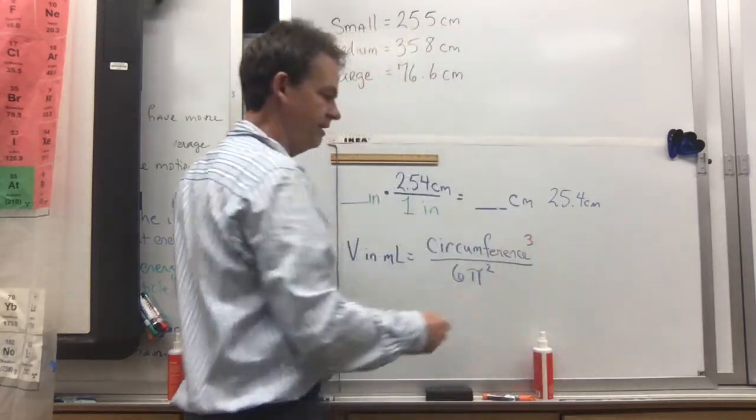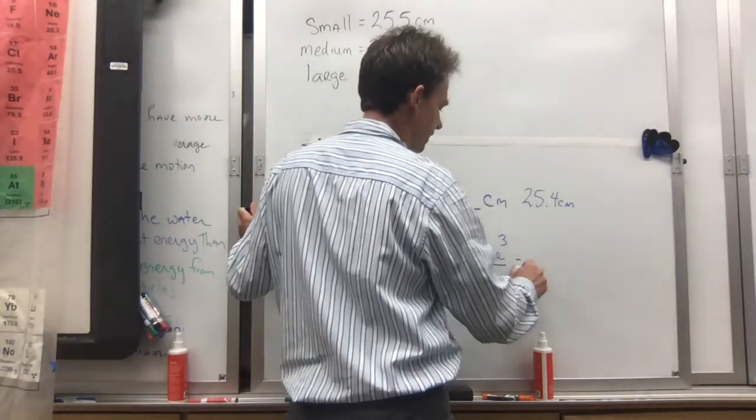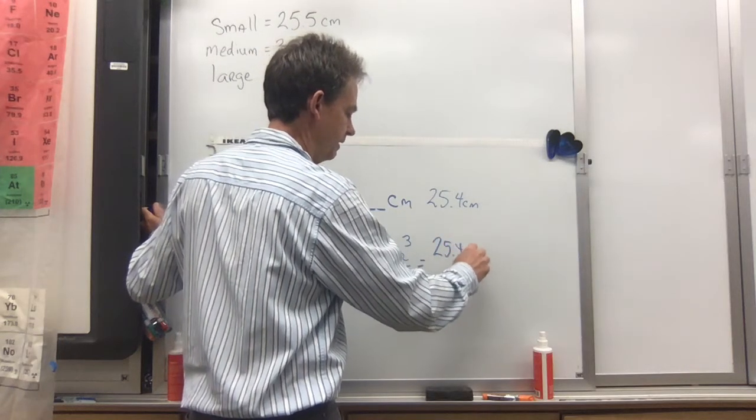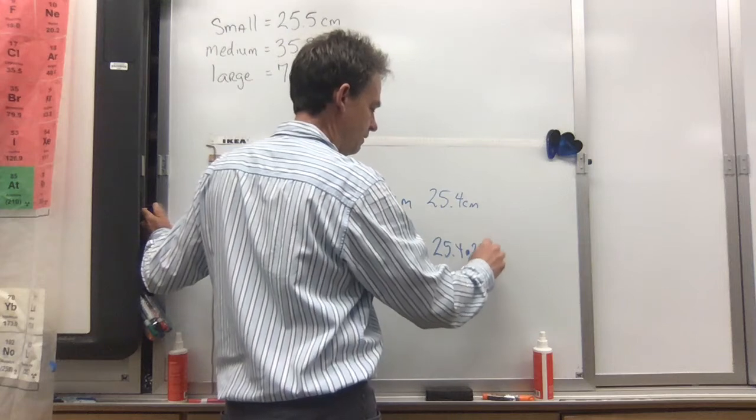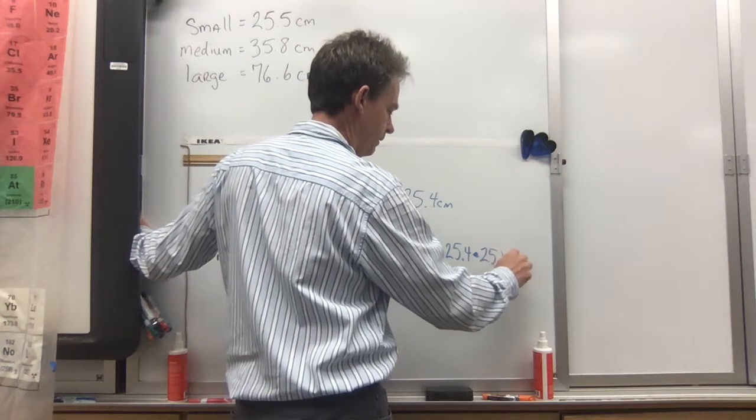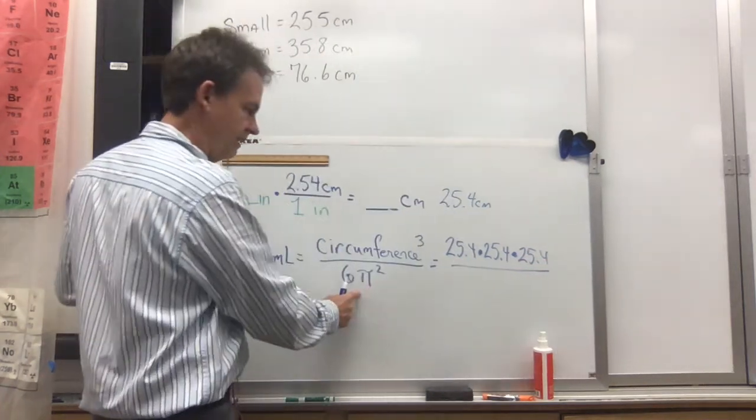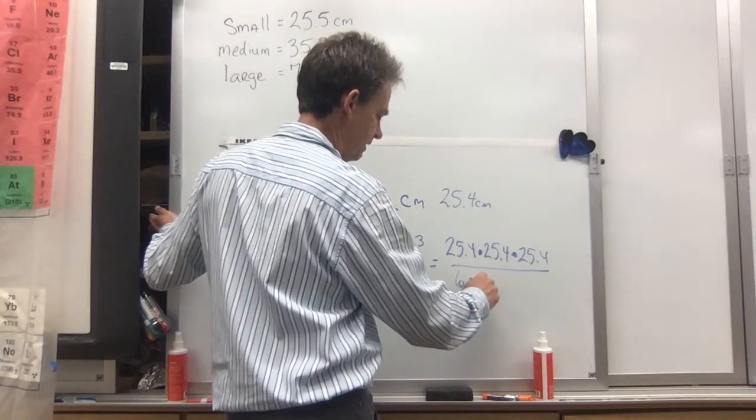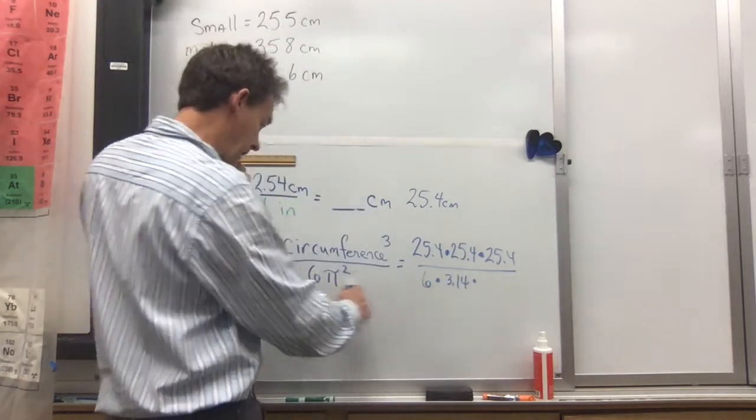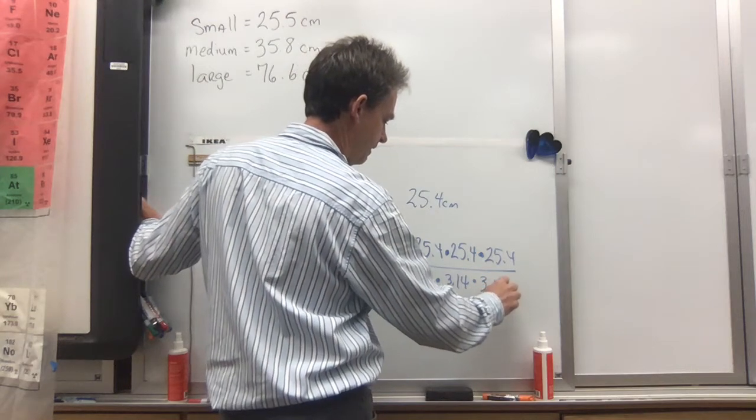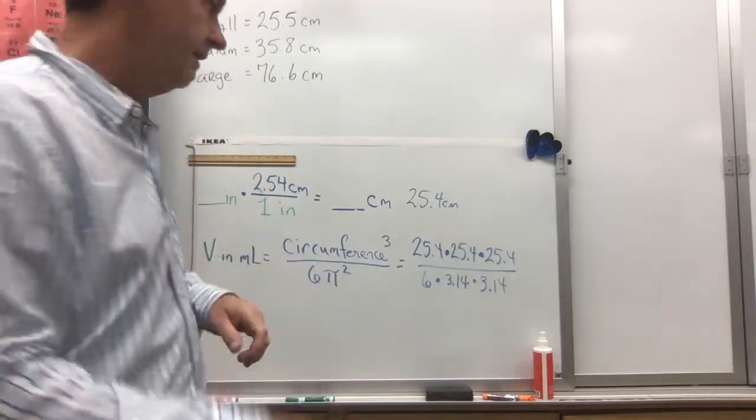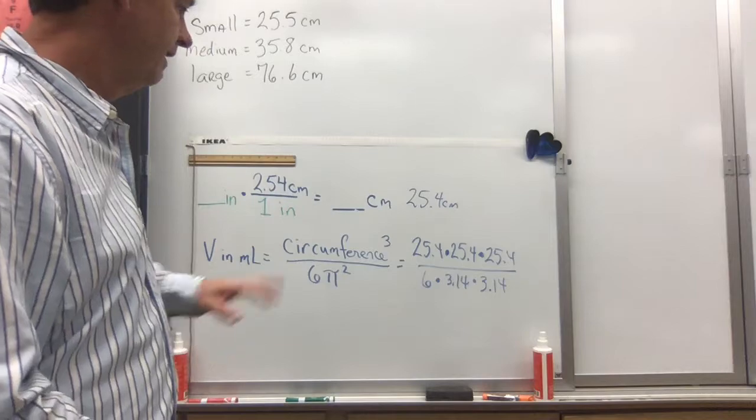To do this calculation, a lot of people say 'I don't know how to do that.' Remember, all that cubed means is multiply by three. So you do 25.4 times 25.4 times 25.4, and then you have a square here, so you can do 6 times 3.14 and then you just repeat it again because you're squaring. You don't need no fancy calculator—you can do that on your iPhone or Android. So that's the calculations you have to do.